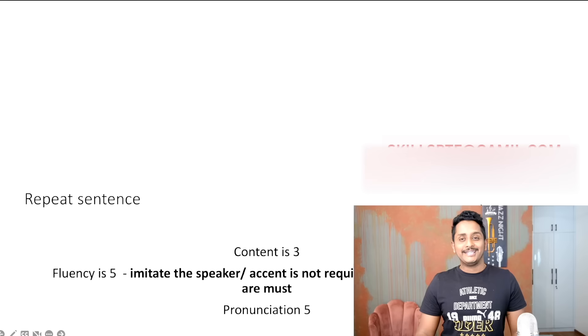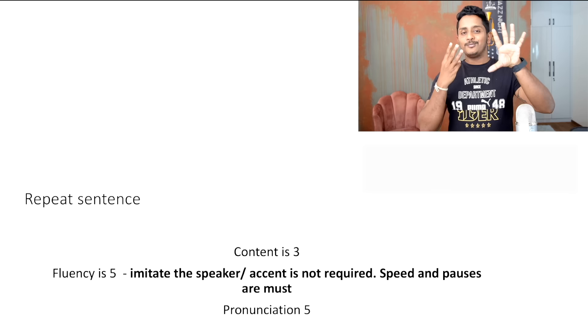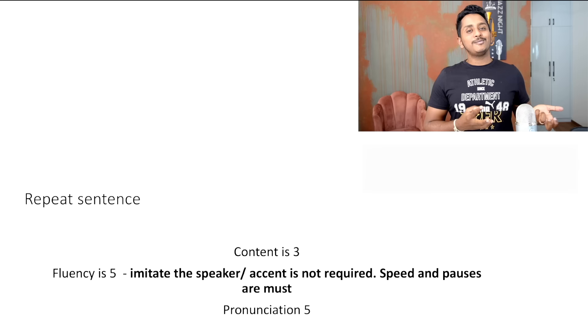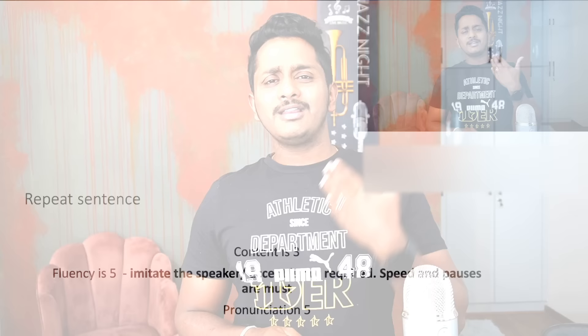In repeat sentence, the content is not five marks — the content is three marks and fluency is five. What is more important? Five or three? Five is more weighted. So fluency is more important than content. Pronunciation is also five marks — pronunciation is about clarity. If you are fluent, automatically pronunciation marks go up. The idea being: content is less priority.